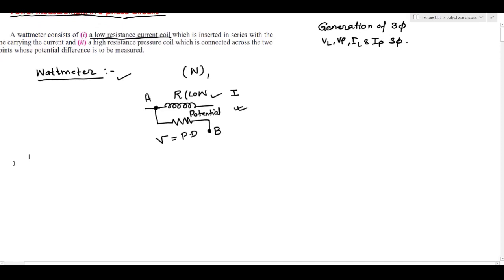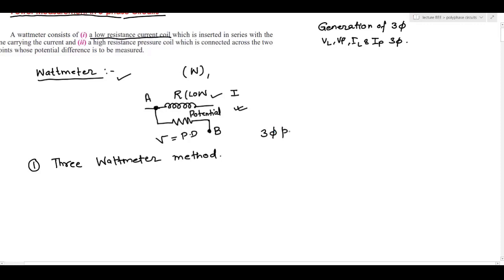There are different methods by which we can measure the power in three-phase circuits. The first method is the three wattmeter method. In this method we generally use three wattmeters to measure the three-phase power. Since there are basically three phases, we use one wattmeter per phase to measure power in each phase.